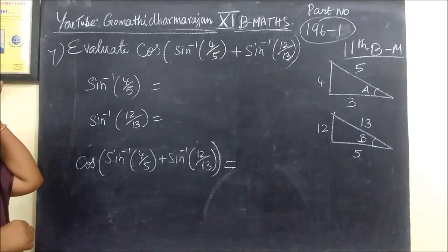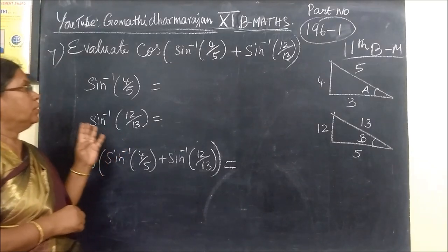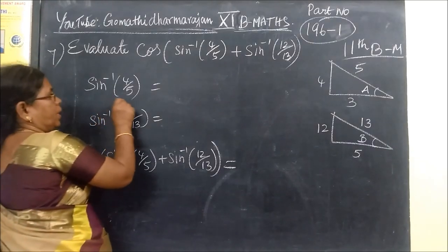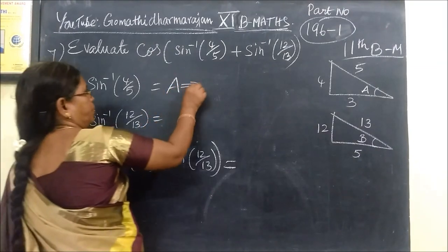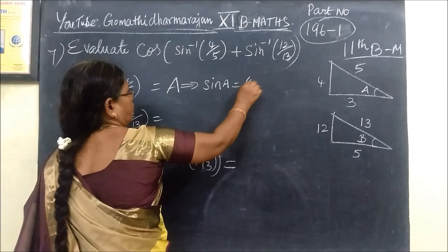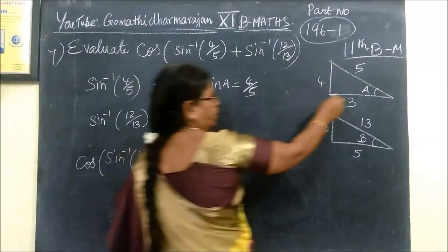You are given cos of sin inverse 4 by 5 plus sin inverse 12 by 13. Now, sin inverse 4 by 5 is some A as well. So this implies sin A equal to 4 by 5. This is what we have done. So this triangle is here.